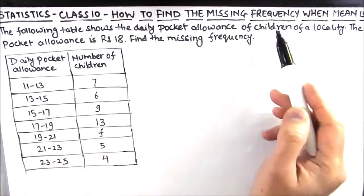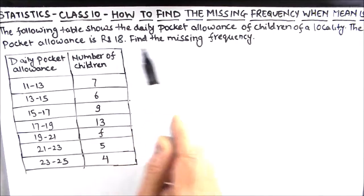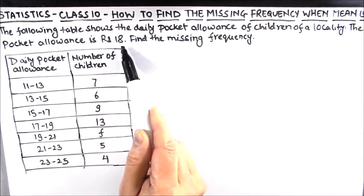daily pocket allowance of children of a locality. The mean pocket allowance is rupees 18. Find the missing frequency. So the missing frequency is f here in the table, and we have been given the mean as 18.